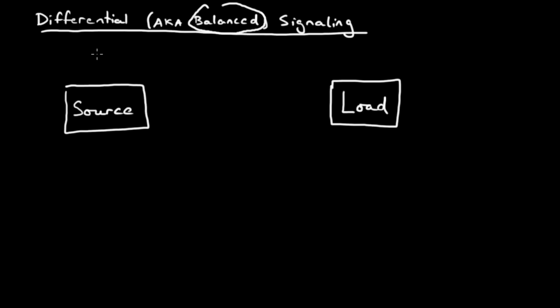Single-ended signaling is by far the more common and more intuitive way to transmit a signal from source to load. In single-ended signaling, you have exactly one ground for any arbitrary number of signal lines in your system. So let me draw what I mean.